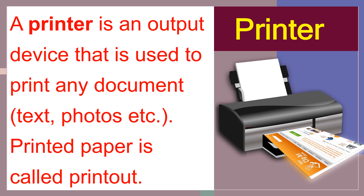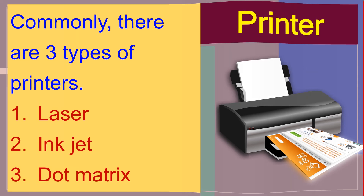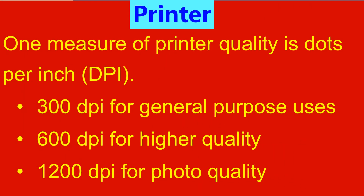The printer is an output device used to take prints. Printed paper is called a printout. There are three types of printers: laser printer, inkjet printer, and dot matrix printer. Printer quality is measured in dots per inch. 1200 DPI is for photo quality, and 300 DPI is for general purpose.